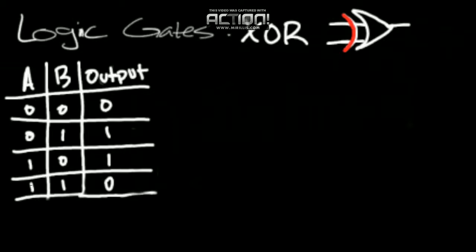For the fourth case, A and B are both true, but the output is false. Here's where we diverge, and we get the special nature of the exclusive OR gate, or the XOR gate. Again, only one can be true. There can only be one.